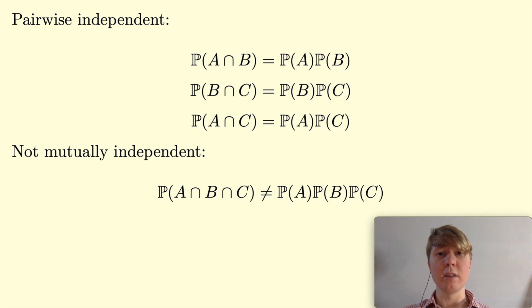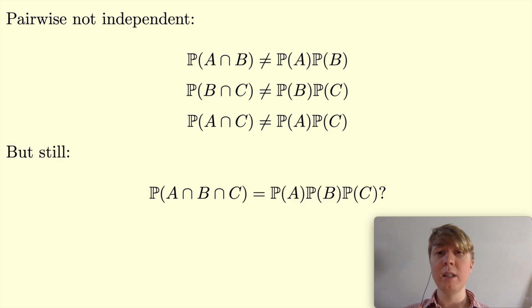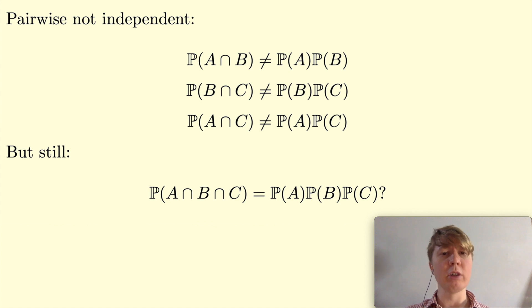I was thinking: what if you try to have some events which are pairwise not independent — so A and B aren't independent, B and C aren't, A and C aren't — but as a trio they kind of behave independently? Just a warning: this wouldn't mean they're mutually independent, since mutual independence requires pairwise independence as well. This is just a fun curiosity. If you'd like to try finding your own examples, pause the video here — otherwise I'll share my solution.